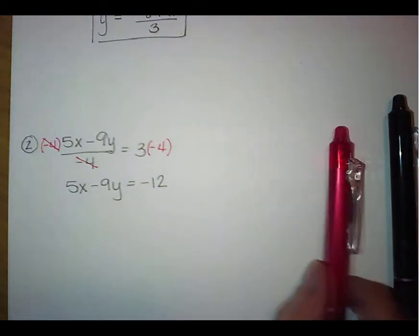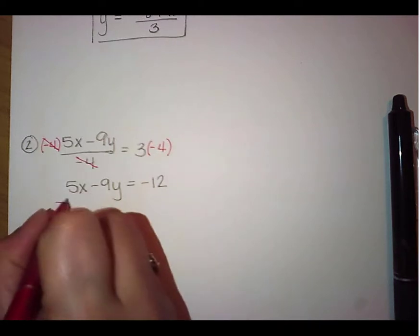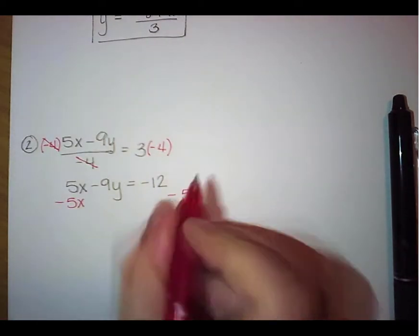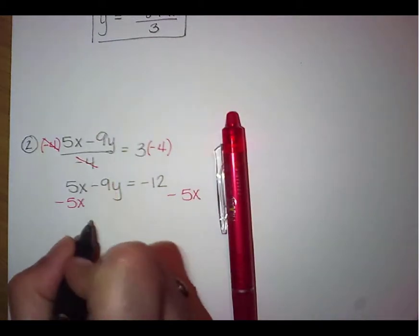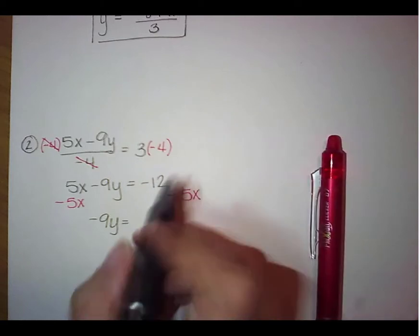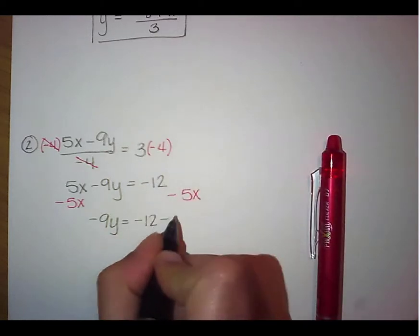the negative 4s are going to cancel. So we have 5x minus 9y equals negative 12. We're then going to move this 5x by subtracting 5x from both sides. That is going to give us negative 9y equals negative 12 minus 5x.